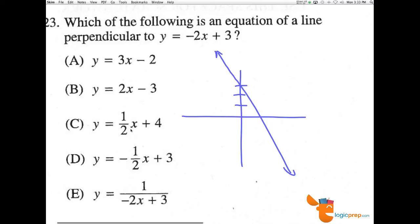We know this one has a y-intercept of 4, slope of 1 half, and it's positive 1 half. So they would be negative reciprocals and perpendicular to one another.